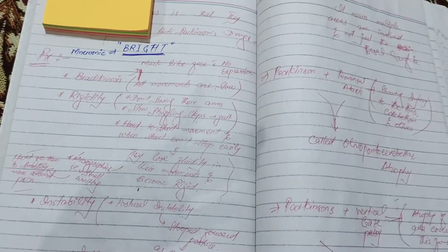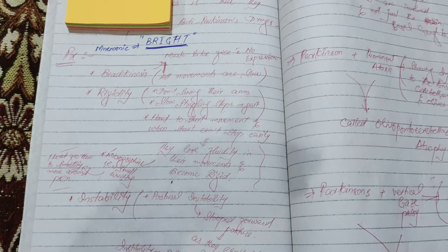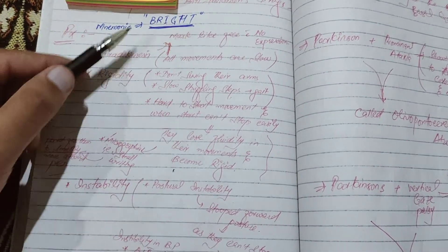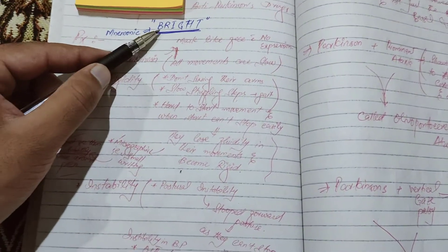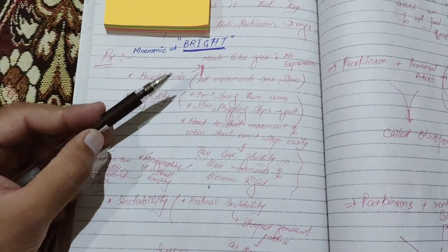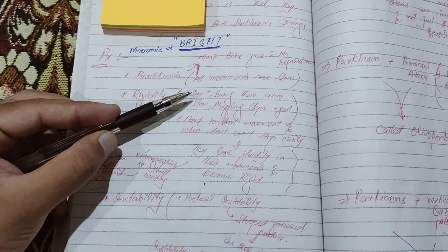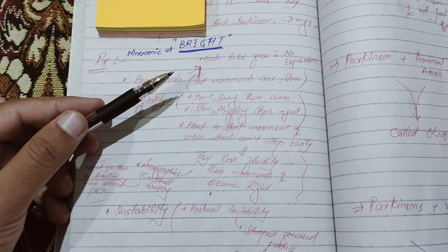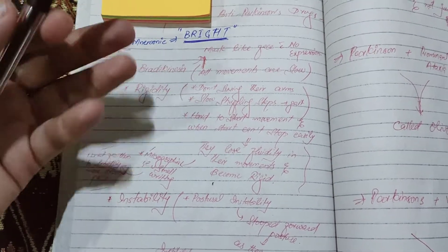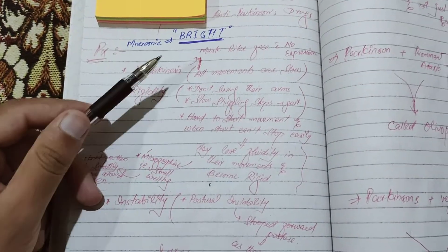Today we are going to discuss the various symptoms of Parkinson's disease, which can be remembered by the mnemonic BRIGHT. The first letter, B, stands for bradykinesia, which is very important in these patients. Bradykinesia means all of their movements are slow — these patients find it really hard to initiate movement, and once motion is initiated, they find it really hard to stop it.